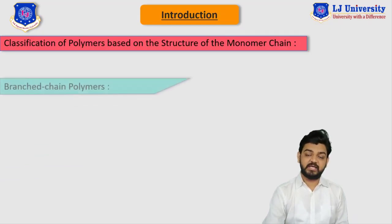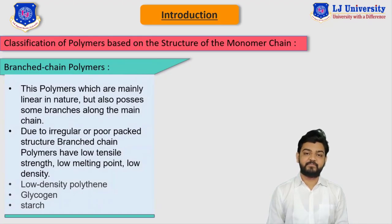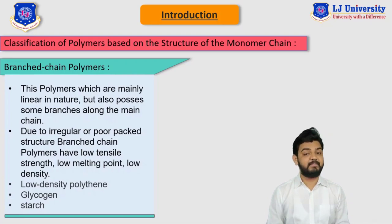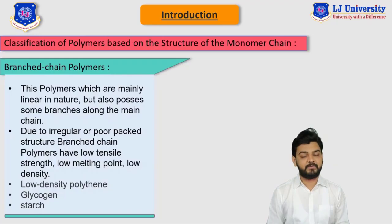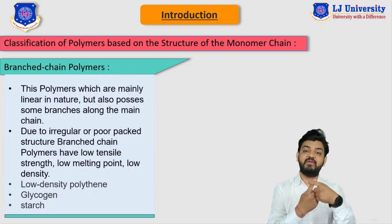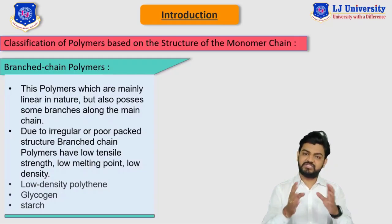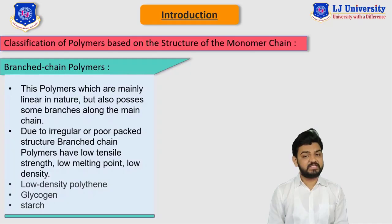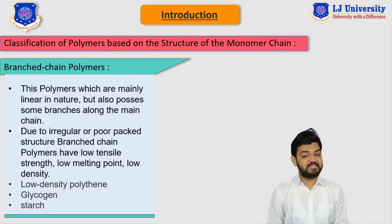In this video, we are going to see the branched chain polymer. These branched chain polymers are basically linear polymers, but they have certain branches on the backbone of the linear polymer. So if this line is the linear polymer, then this is the branch on it — combinedly we can say that this is the branched polymer. Here on screen, you can see that this polymer is mainly linear in nature but also has some branches along with it.